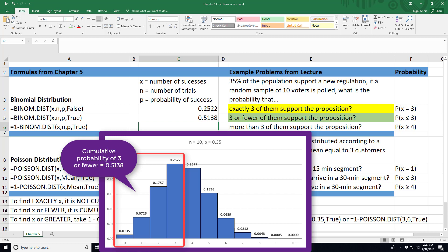And so our probability that three or less voters support the proposition will be 0.5138.